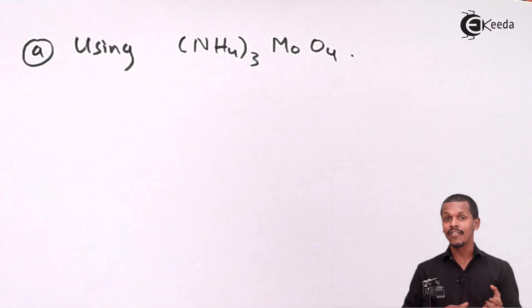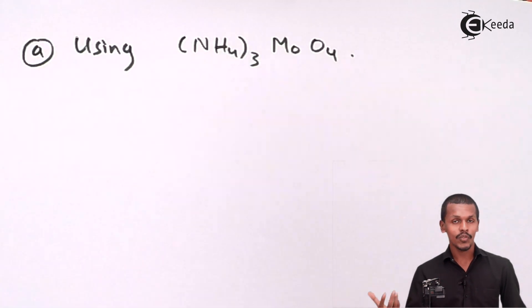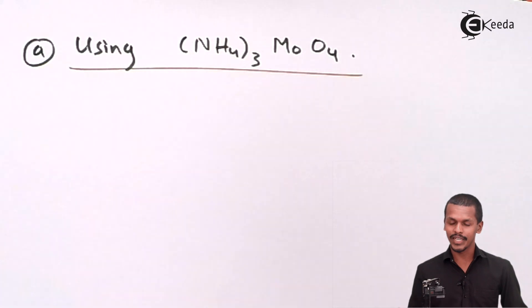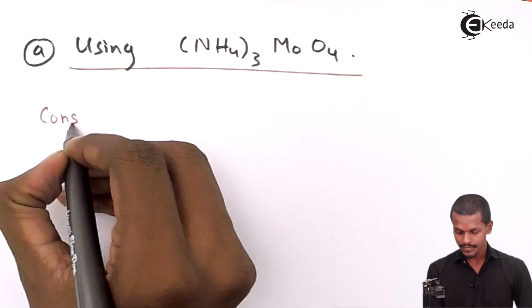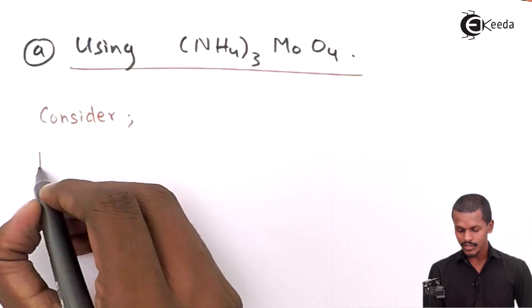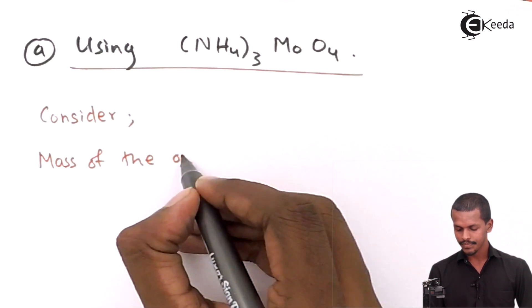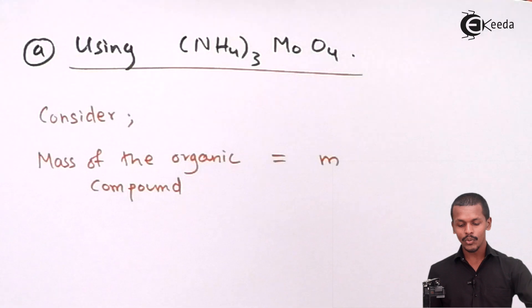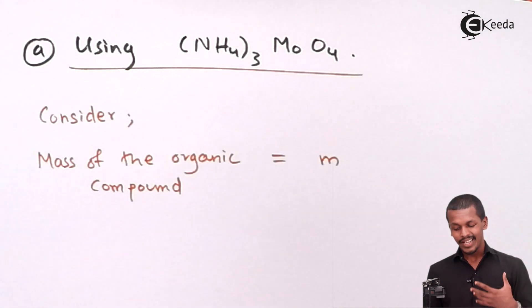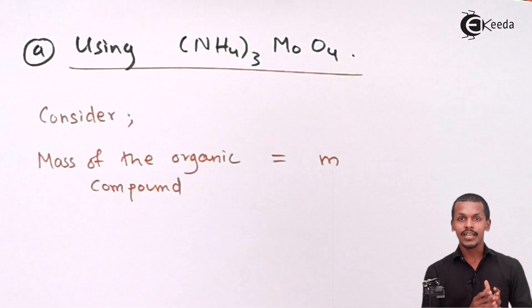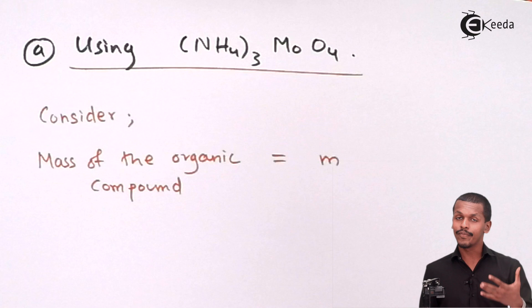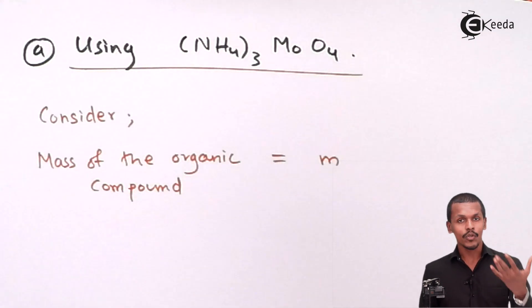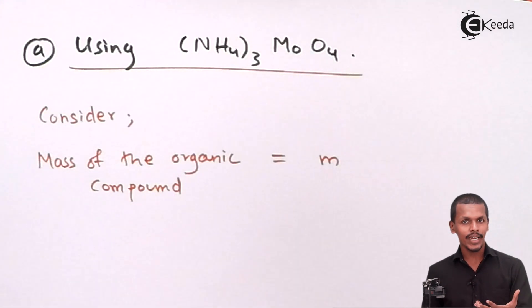The yellow ammonium phosphomolybdate precipitate allows us to determine how much phosphorus is present in the given amount of organic compound. Let us consider the mass of the organic compound as m. This mass is reacted with various reagents including ammonium molybdate, and the presence of phosphorus is indicated by the formation of the complex ammonium phosphomolybdate.